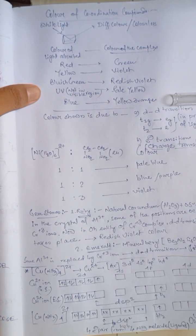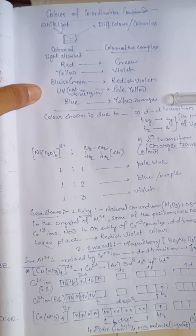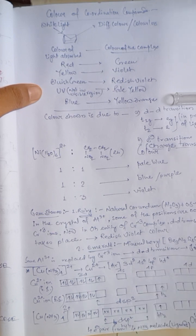We are going to discuss an interesting scenario where nickel 2 plus ion when dissolved in water, it shows a particular color.